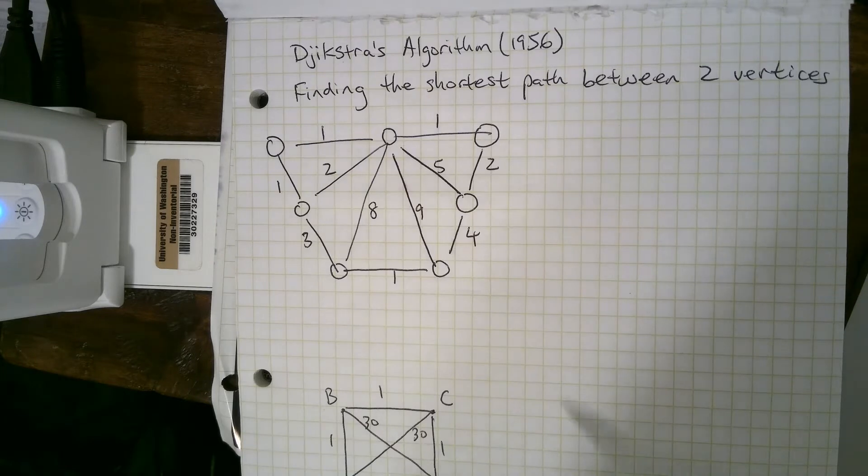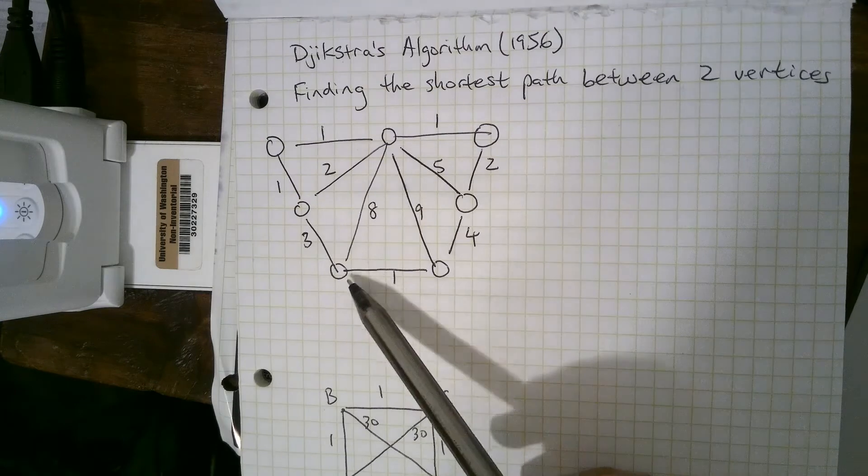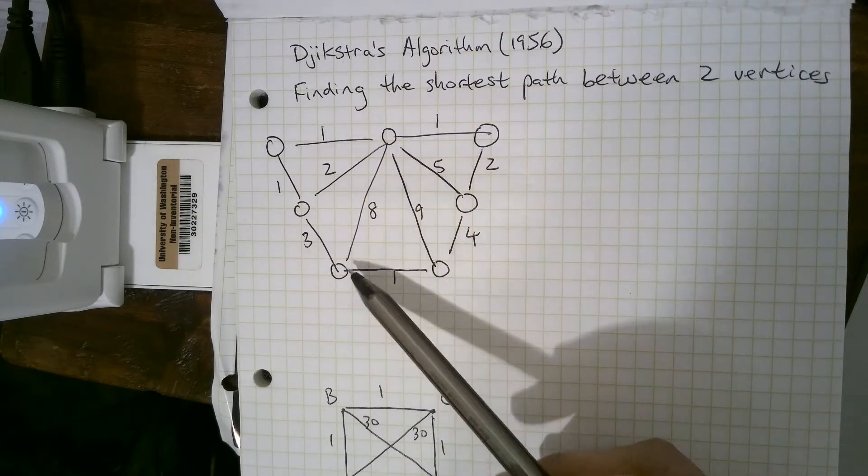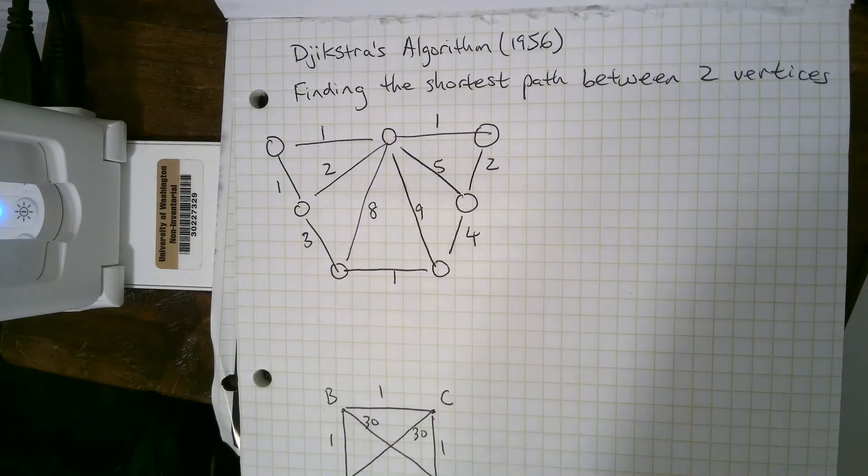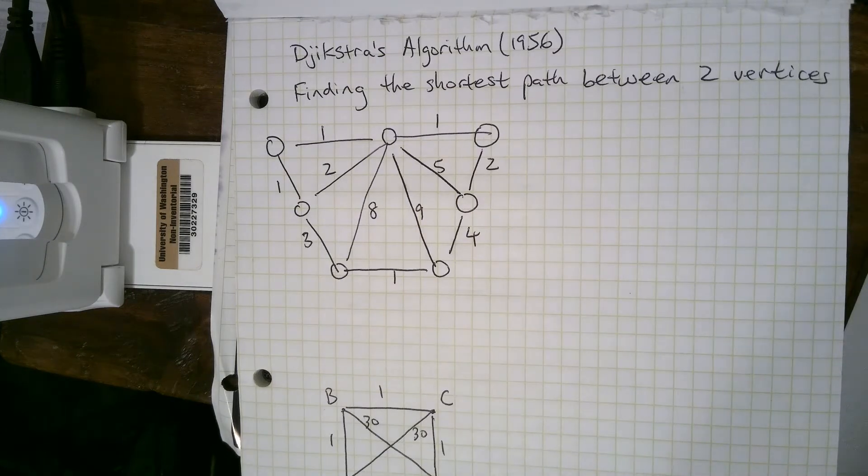So we'll look at this graph as an example, and this is just a regular network graph with vertices and weighted edges. The vertices are drawn with circles here so that I can fill numbers in the circles. That's the only purpose. They're just regular vertices.